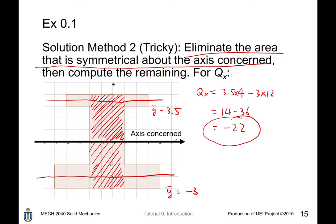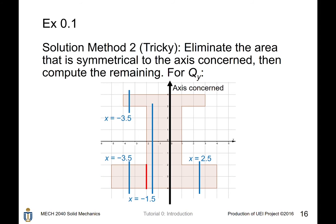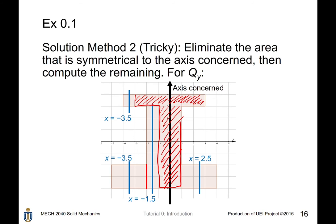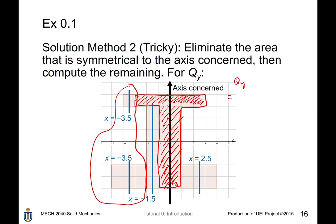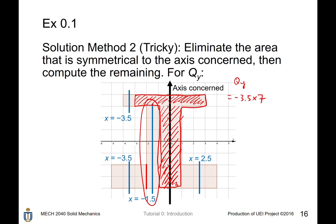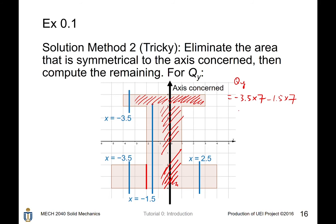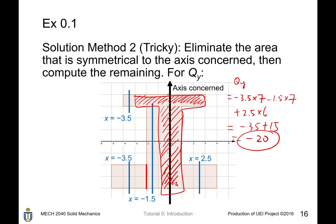For Qy using the elimination method, we eliminate the T-shaped region that is symmetrical about the axis of concern. The remaining pieces are: seven cells with x̄ = −3.5, seven cells in the middle with x̄ = −1.5, and six cells with x̄ = 2.5. The total becomes −24.5 − 10.5 + 15 = −20, which also agrees with the previous results.